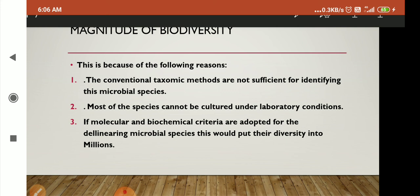Moving to Indian biodiversity: India is one of the 12 mega-diversity countries of the world. India has only 2.4% of the world's land area, but it accounts for an impressive 8.1% of the world's species diversity. There are about 45,000 species of plants, and twice as many animal species have been recorded from India.